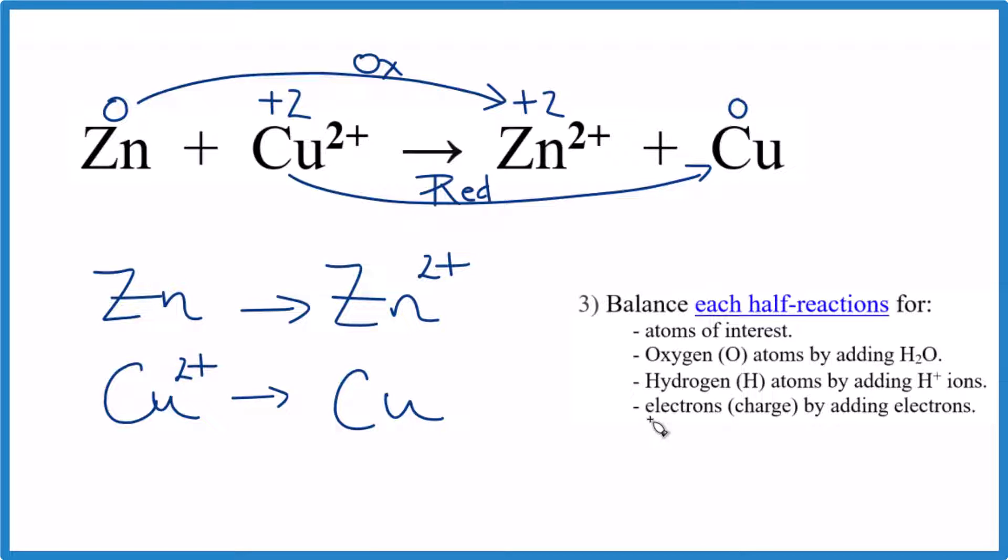What we do need though, is to balance the electrons. We're going to balance the charge by adding electrons. Over here, it's neutral. It's zero, two plus. Let's add two negative charges, two electrons. Now both sides of the half reaction, they're balanced.